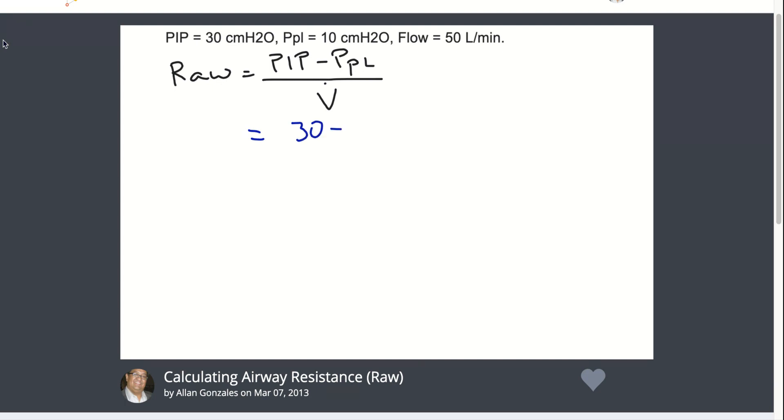If you are going to write out this equation, this will look like 30 minus 10 over 50 liters per minute. However, we will need to convert this to liters per second. So 50 liters per minute is the same as 50 liters over 60 seconds.